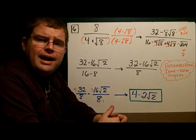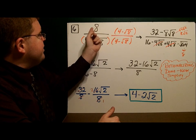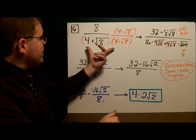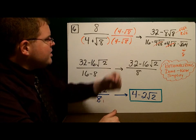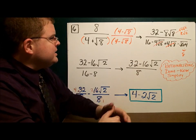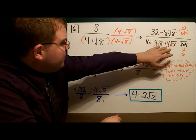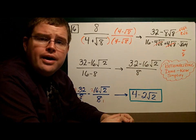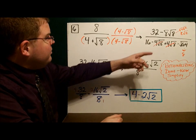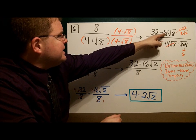I'm going to multiply by 4 minus the square root of 8 on both top and bottom. Up top, using the distributive property, that's 32 minus 8 square roots of 8. Down in the denominator: 4 times 4 is 16, minus 4 square roots of 8 plus 4 square roots of 8 minus the square root of 64. The middle terms cancel out, leaving me with a perfect square — exactly what I want. The square root of 8 simplifies to 2 square roots of 2, so that becomes 16 square roots of 2.